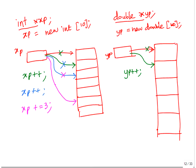The same thing is applicable when you do --. I hope you got the idea. In this specific example with doubles, it goes up by 8 bytes. Each integer location is 4 bytes, whereas each double location is 8 bytes.